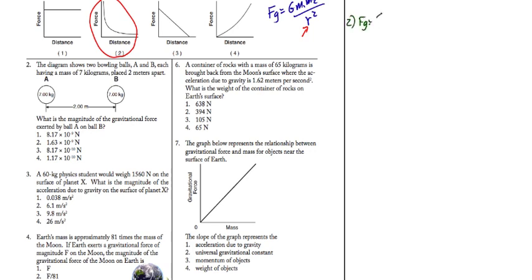Force of gravity is the universal gravitational constant times the product of the masses divided by the square of the distance between their centers, or 6.67 times 10 to the minus 11 newton meters squared per kilogram squared. Each of the masses is 7 kilograms. And they happen to be 2 meters apart.